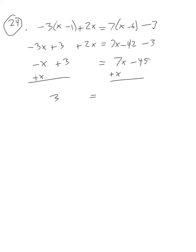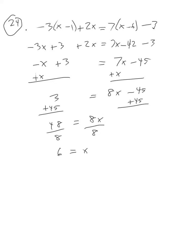From negative x plus 3 equals 7x minus 45, adding x to both sides gives 3 equals 8x minus 45. Adding 45 to both sides gives 48 equals 8x. Dividing both sides by 8 gives x equals 6, so the solution is 6.